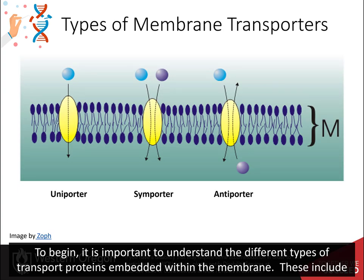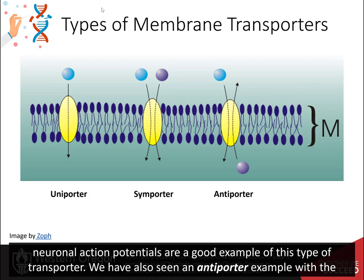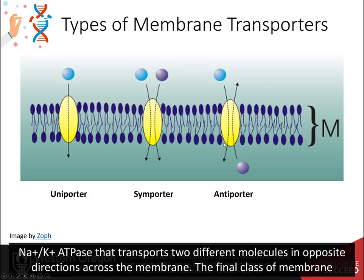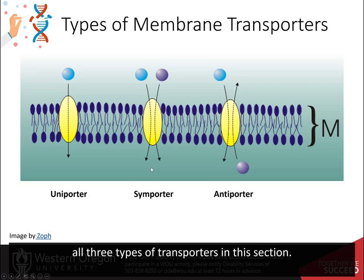To begin, it's important to understand the different types of transport proteins embedded within the membrane. These include uniporters that only transfer one substance across the membrane — the voltage-gated sodium and potassium channels used in neuronal action potentials are good examples. We have also seen an antiporter example with the sodium-potassium ATPase that transports two different molecules in opposite directions. The final class are symporters, which transport two molecules across the membrane in the same direction.